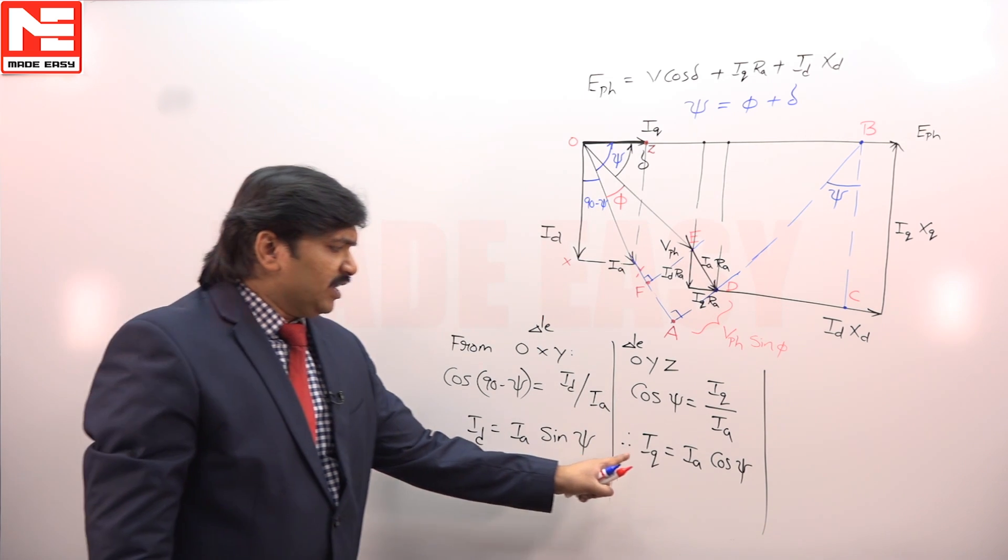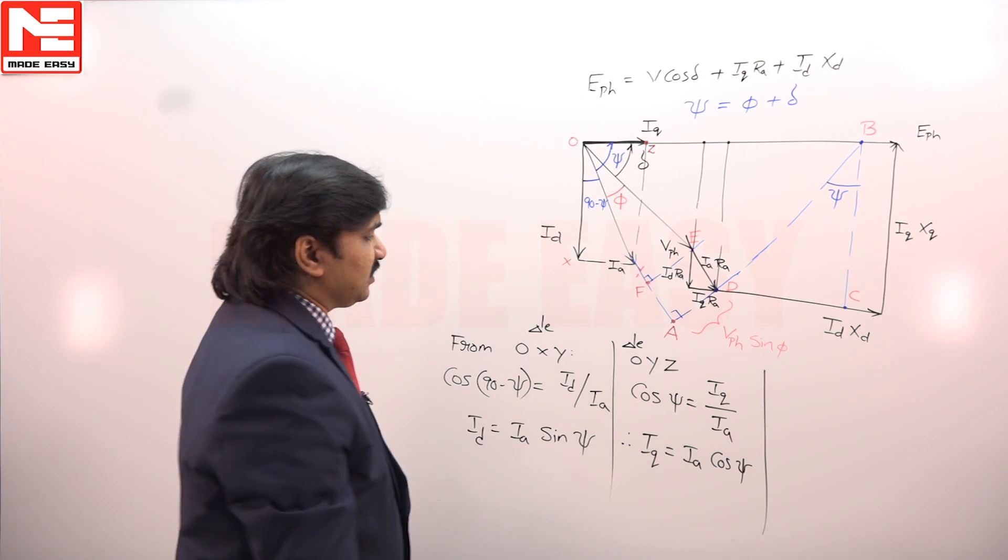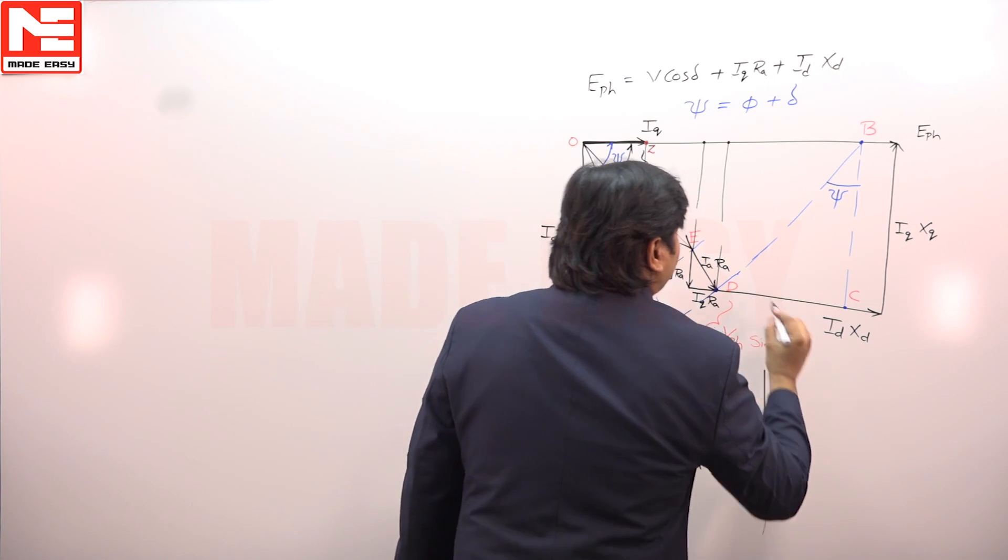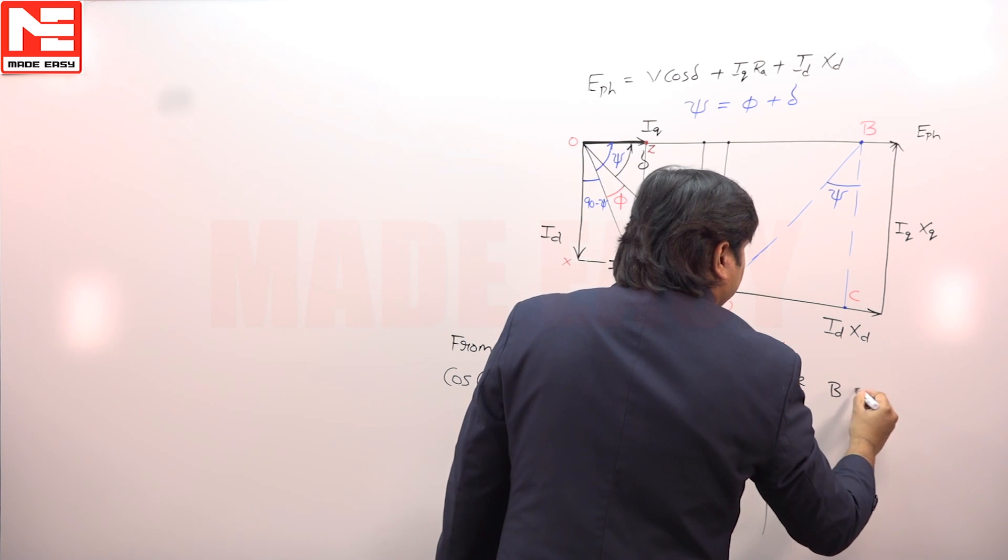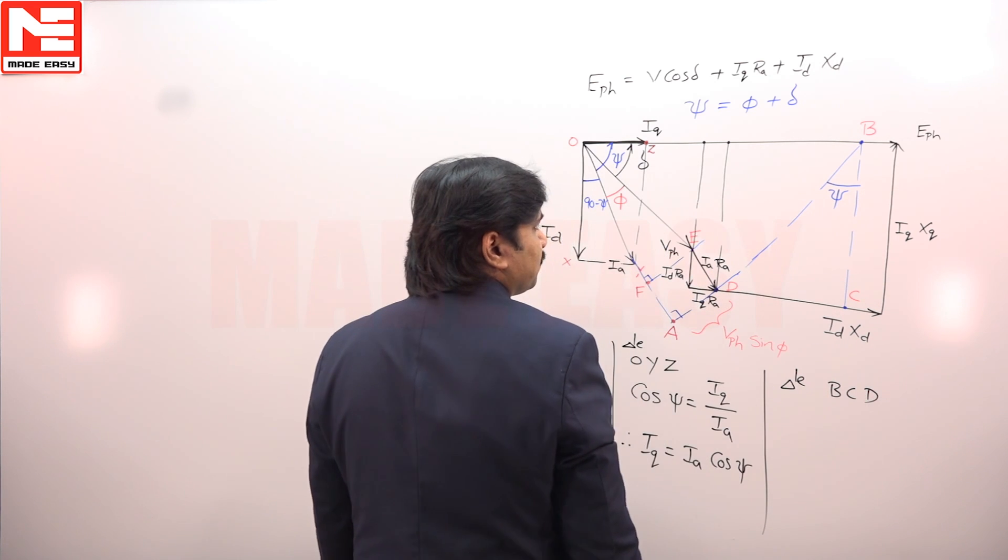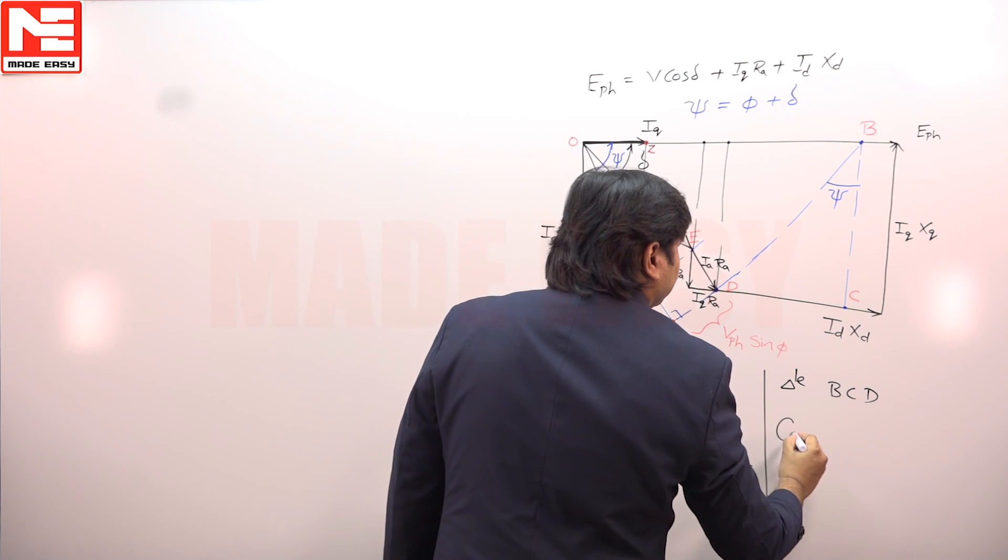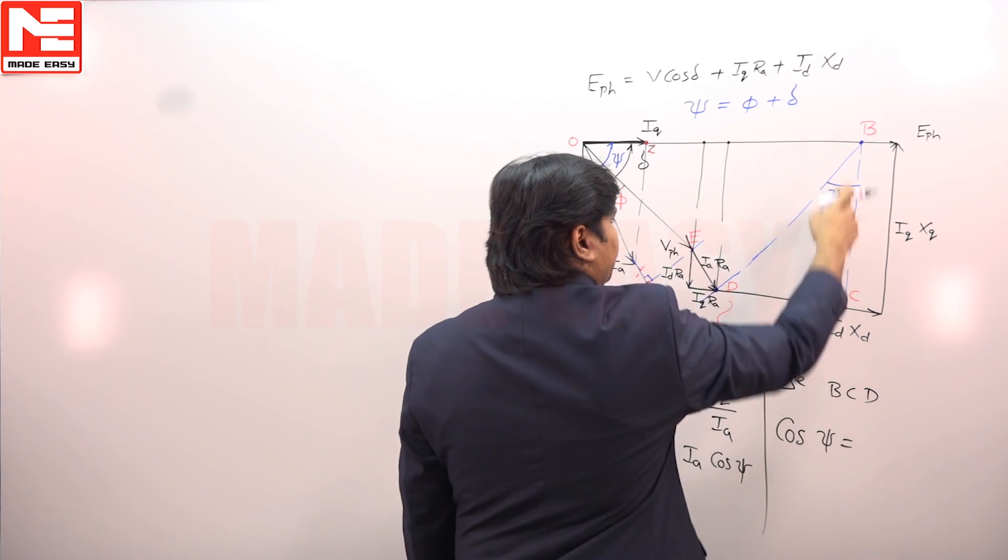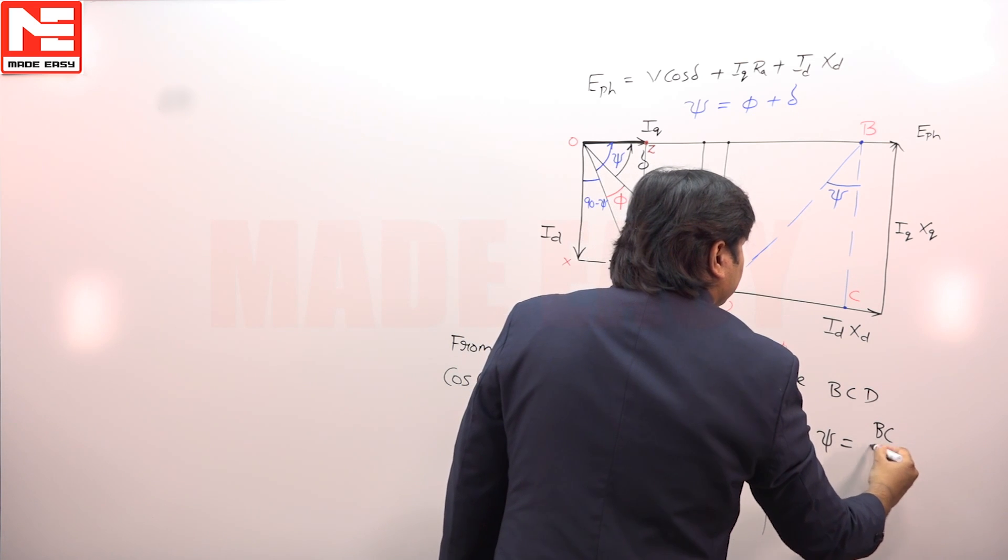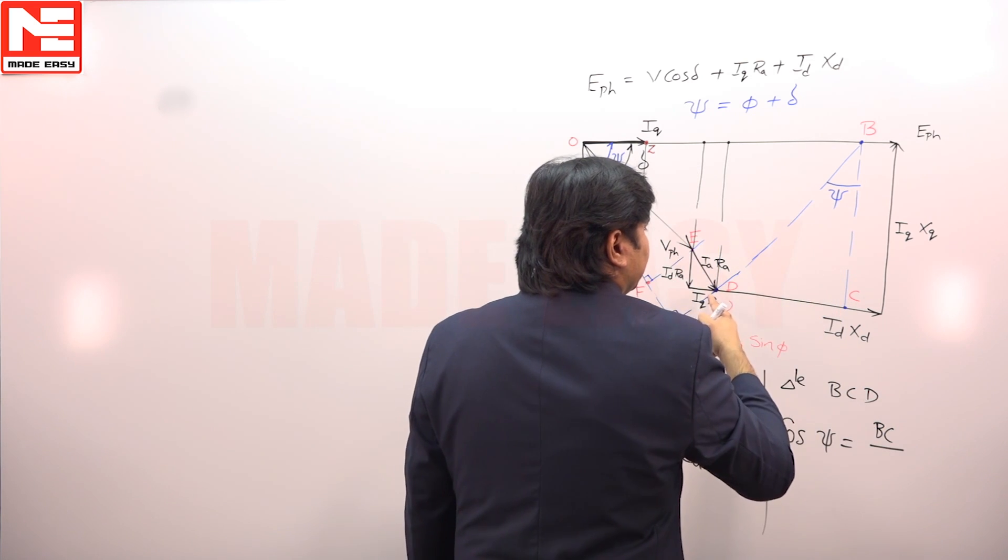These conclusions are valuable for solving the final things. Next, from triangle B, C, D, cos psi is equal to BC by BD.